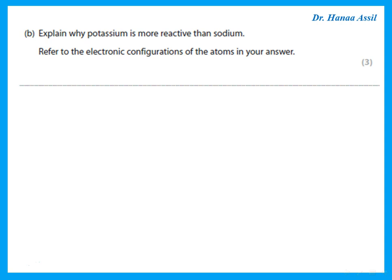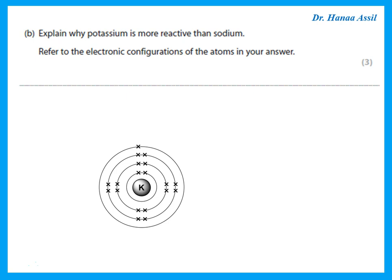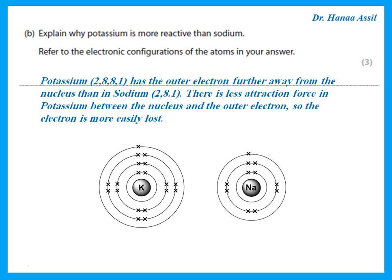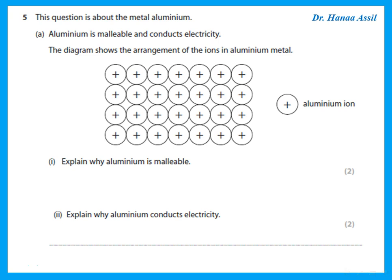To explain why potassium is more reactive than sodium, referring to electronic configurations: potassium is 2,8,8,1 and sodium is 2,8,1. In potassium, the outer electron is further from the nucleus, so there is less attraction between the outer electron and the nucleus. That electron is more easily lost in potassium than in sodium. Always specify which element you are referring to in your answer.